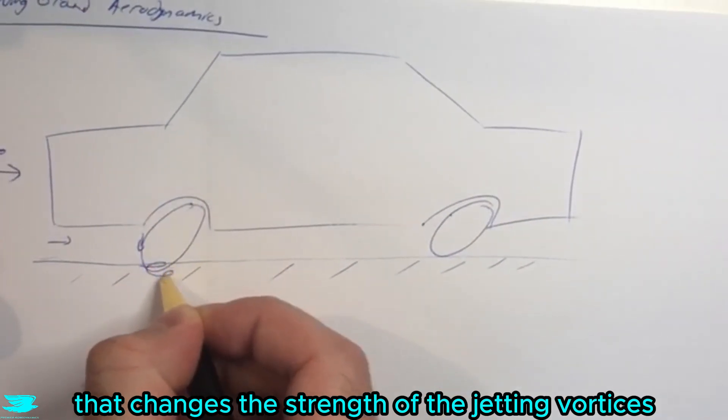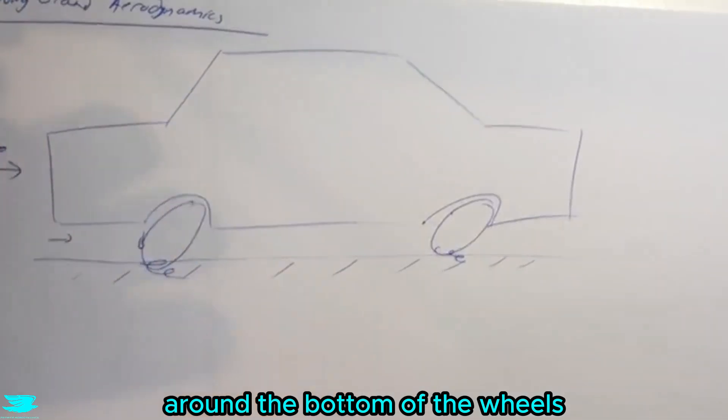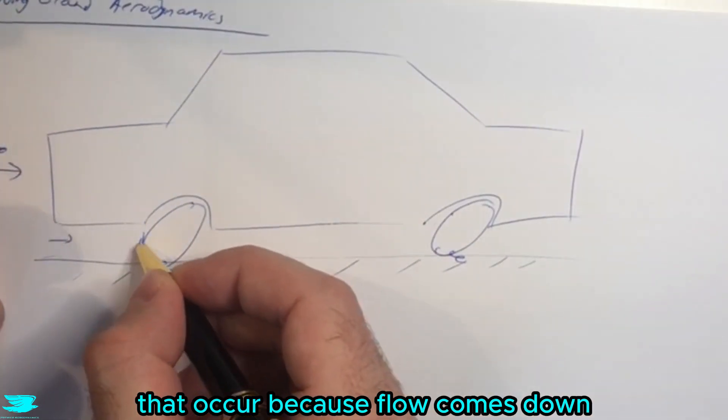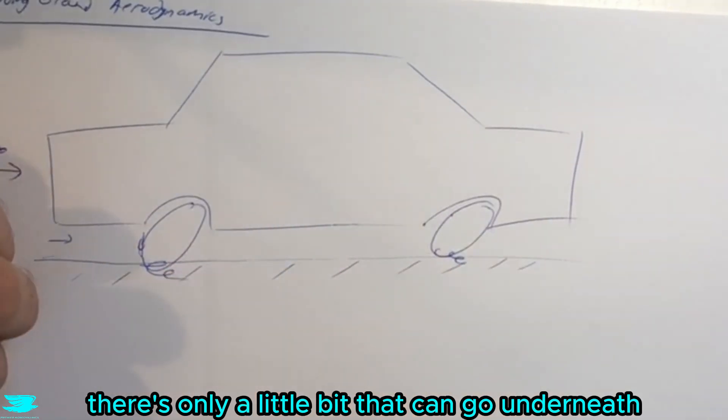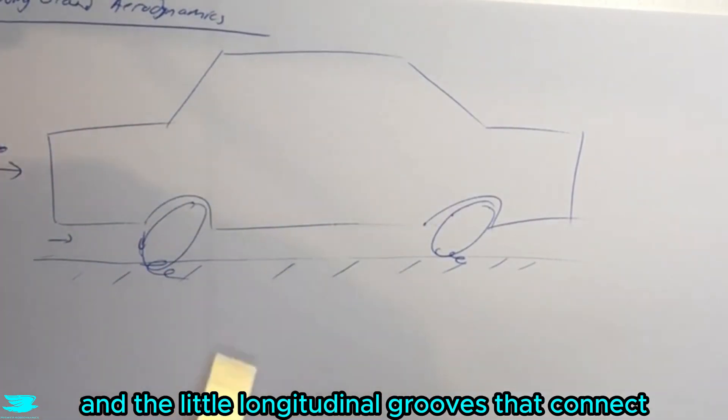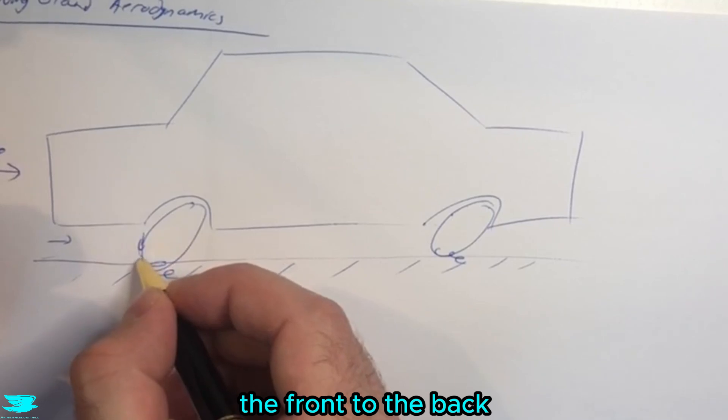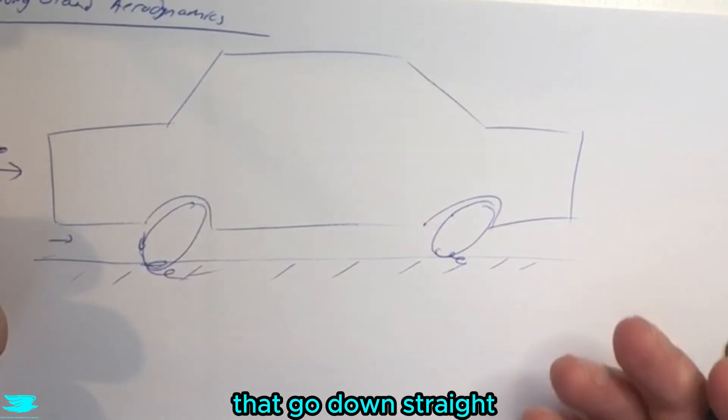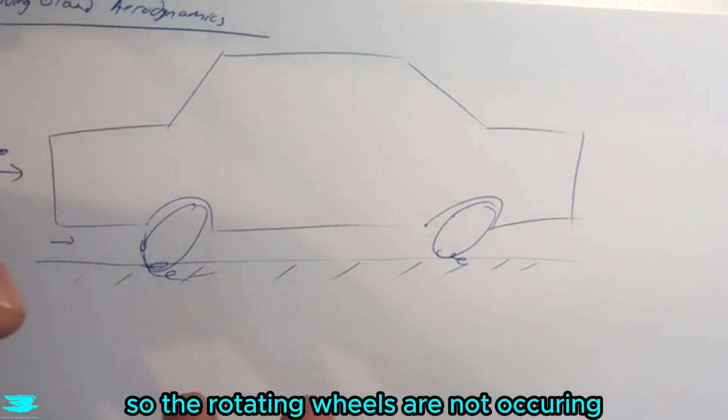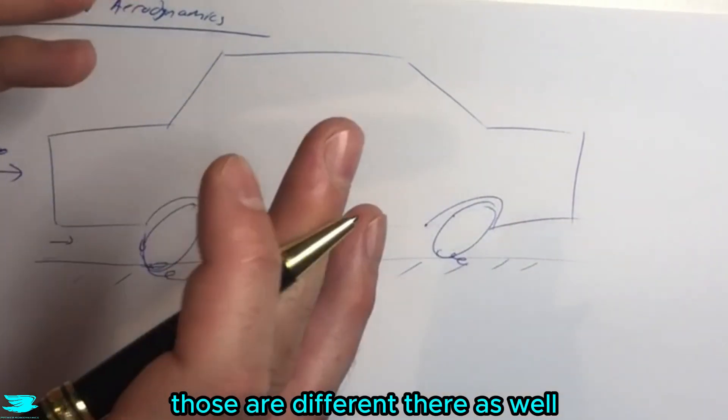That changes the strength of the jetting vortices, which are the vortices around the bottom of the wheels that occur because flow comes down, it has to go somewhere. It can't go underneath really - there's only a little bit that can go in the longitudinal grooves connecting the front to the back. Most of it has to go around the side and that rolls up into these vortices that go downstream.